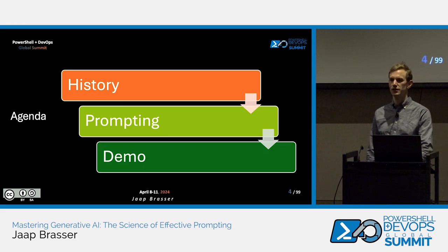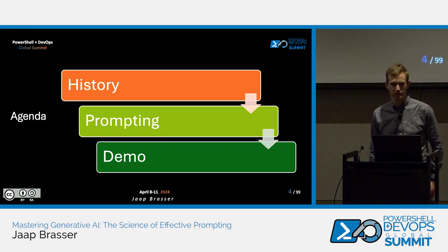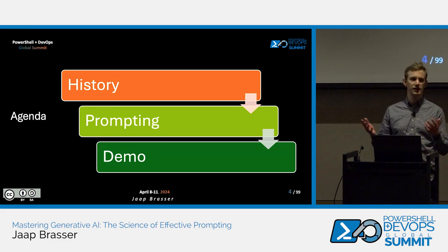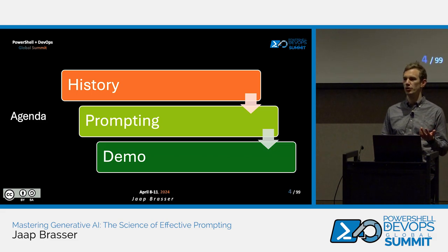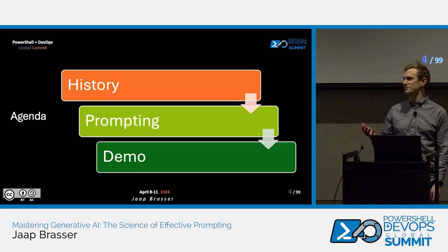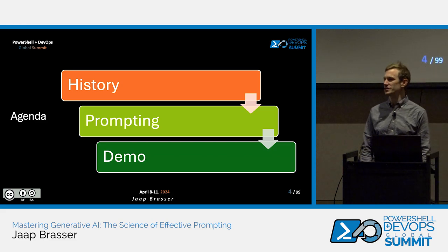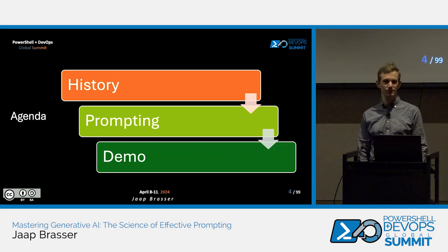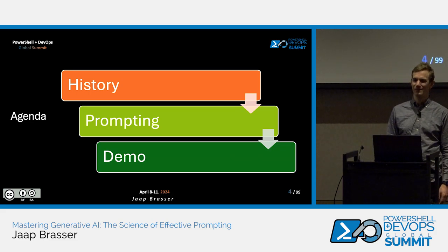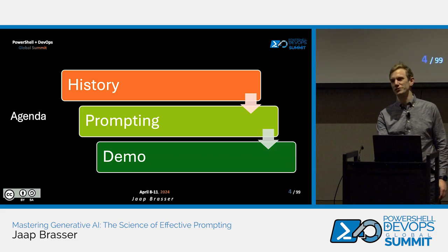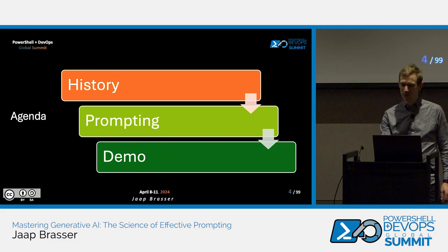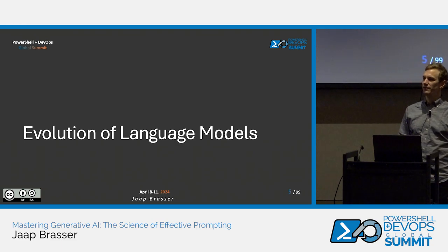Just to get an idea of the room: how many of you are currently using generative models, either OpenAI or Copilot? It's most of the room, so that's good. What's your experience? It's indeed very mixed — it also depends on the application and what you're trying to make it do. Let's talk a bit about the evolution.